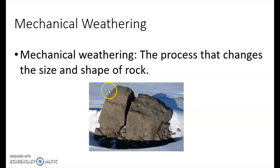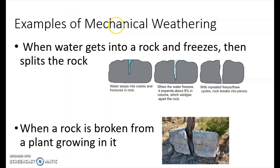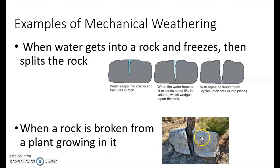Like this — this used to be one rock, and then probably water got in and froze, and look, it's split into two. That is mechanical weathering. When water gets into a rock and freezes, it splits the rock. The water got into a little hole, then it froze and split the rock into two pieces. Another example is when a rock is broken from a plant growing in it — look at this tree that split the rock into two.